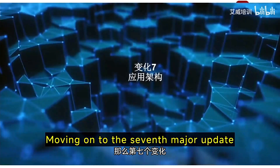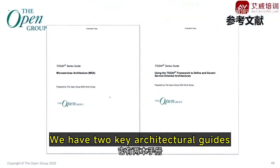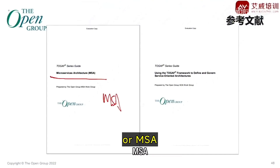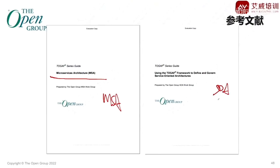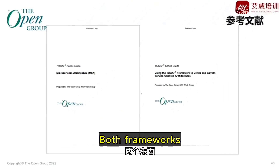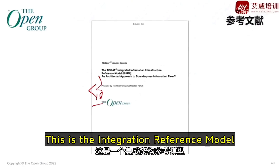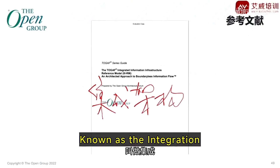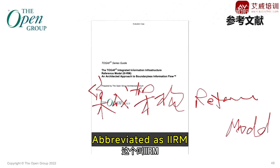Moving on to the seventh major update, which addresses the evolution of application architecture models. We have two key architectural guides: microservices architecture and service-oriented architecture, the latter being a well-established approach. Both frameworks serve as integration reference models — the Integration Reference Model, abbreviated as IRM.